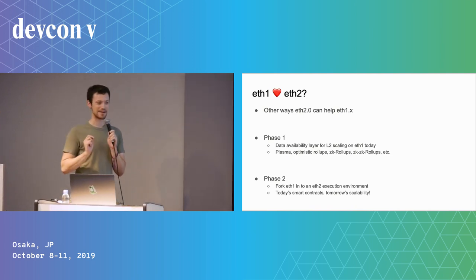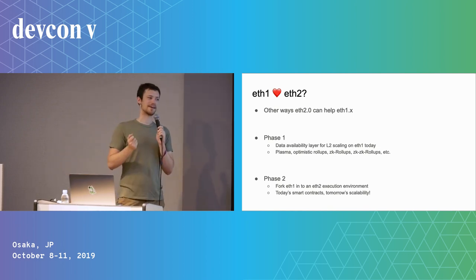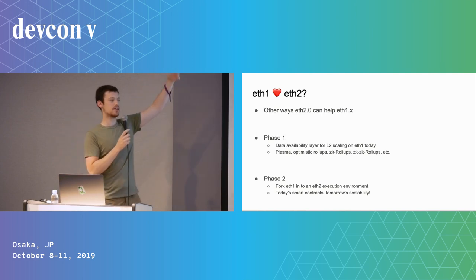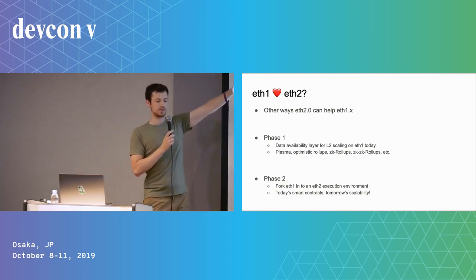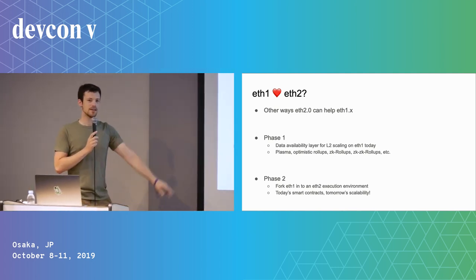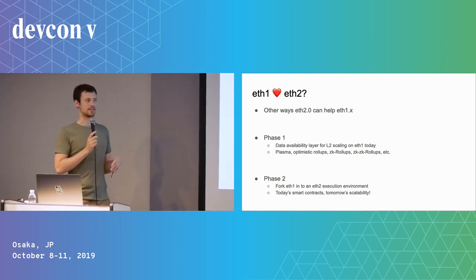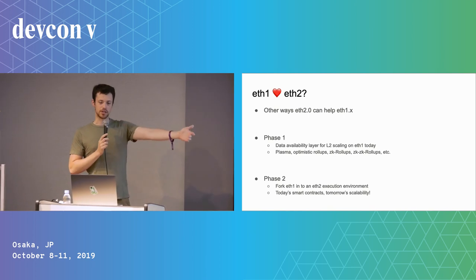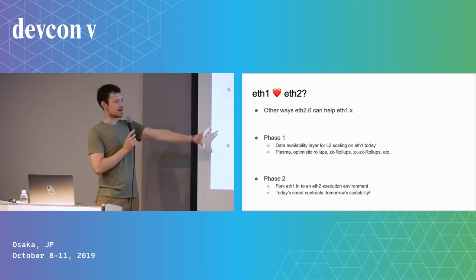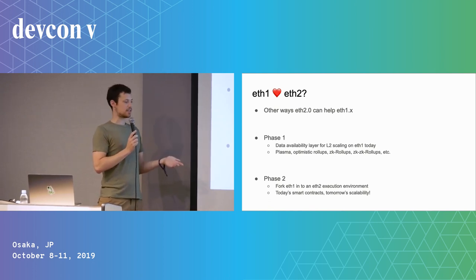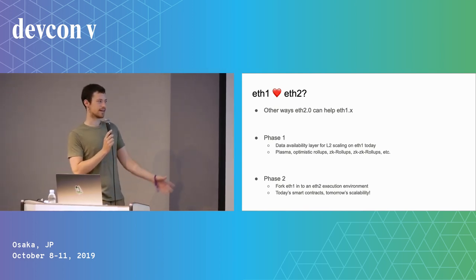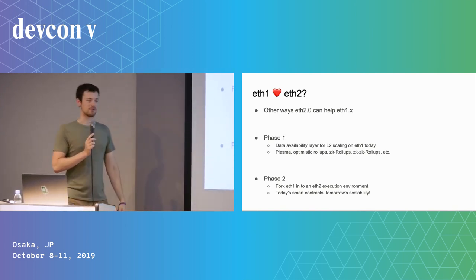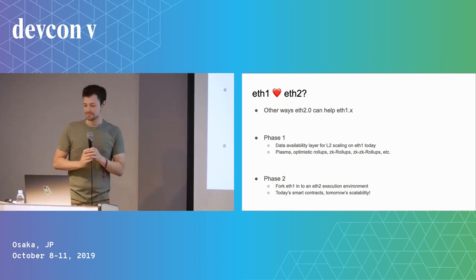We can actually get tangible value out of each phase of the ETH2 deployment. With phase zero we can do the finality gadget. With phase one we can use the shard chains as a data layer for the existing chain, enabling cool things like plasma and zk-rollups. Then in phase two there are ideas around how to move ETH1 into ETH2. With each step of deployment we can get something really useful on Ethereum today.